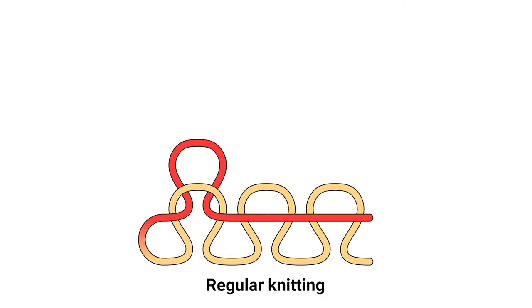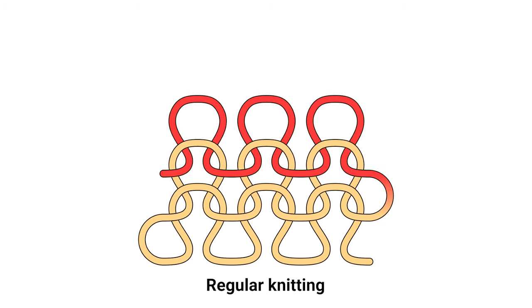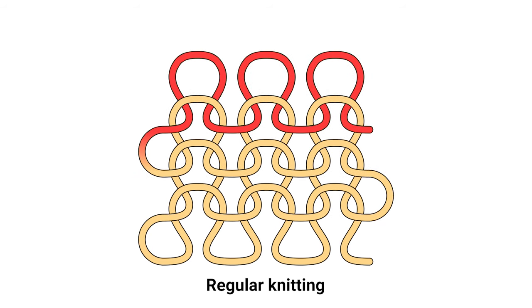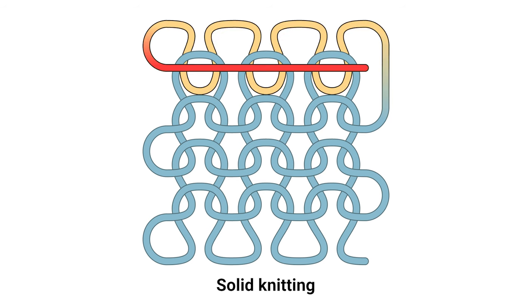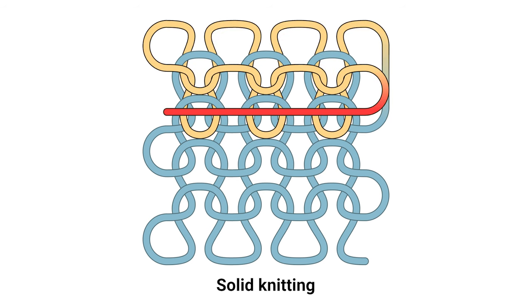Knit fabric is made up of loops. Pulling yarn through an existing loop creates a new loop. In Solid Knitting, one pulls yarn through those loops again to create new loops in the next layer of fabric.